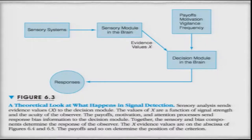Looking at this figure, this is a theoretical representation of what signal detection really means. You can see there are sensory systems here — a sensory module in the brain that evaluates the evidence values, which is basically the intensity of the stimulus. These evidence values feed into a decision module. The brain has to decide whether to say 'different or not different' or 'detected or not detected.' A modulating factor is the payoffs, motivation, or vigilance — how alert you were when that signal was presented, and what the frequency of that signal is. This decision-making module leads to the kind of responses you will end up giving.